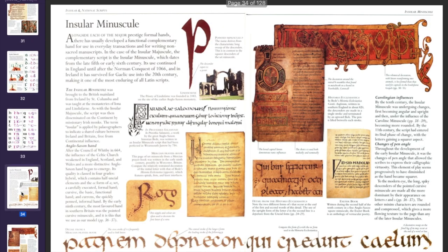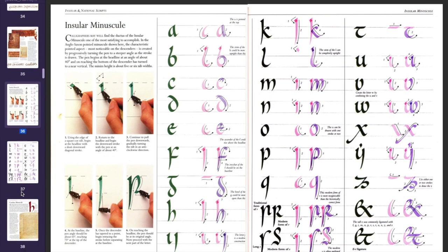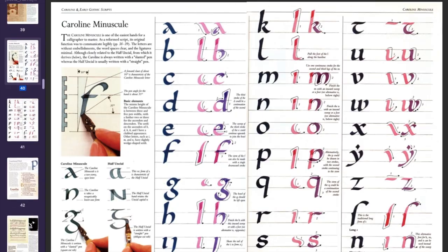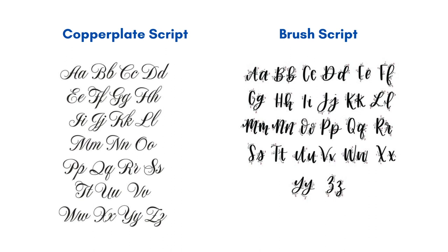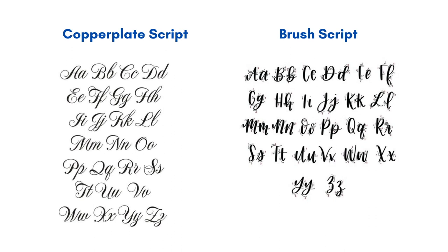Learning any calligraphy script requires consistent practice and dedication. However, learning traditional styles like copperplate script is more demanding compared to modern styles like brush calligraphy, because copperplate has more rules whereas brush calligraphy is more forgiving. Nonetheless, both are beautiful calligraphy styles. This doesn't mean you should start learning as many scripts as possible — it is better to progress slowly and start with one script. Once you have developed beginner level skills, then you can spend time exploring other scripts.